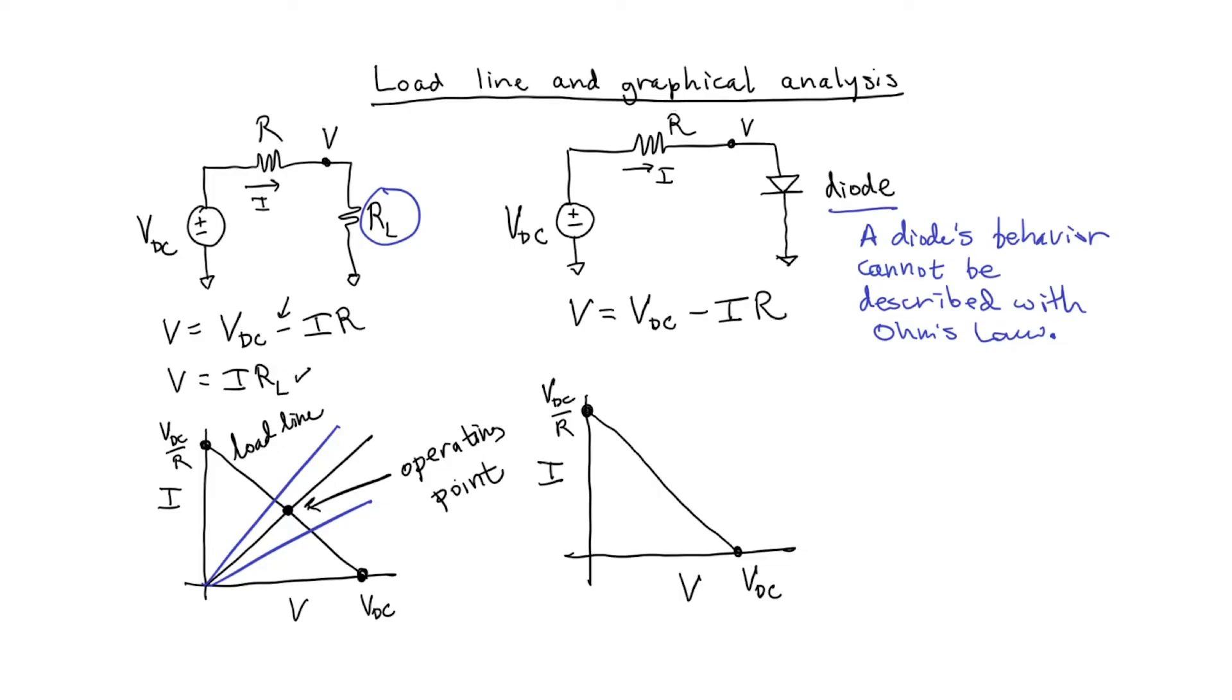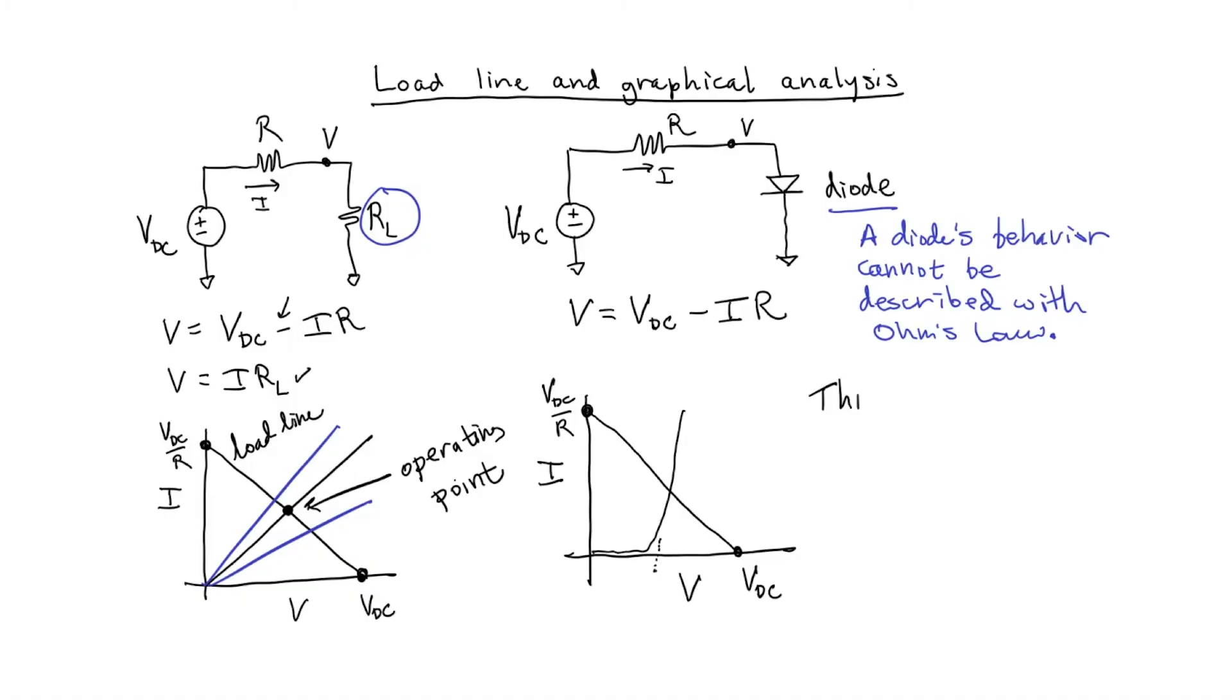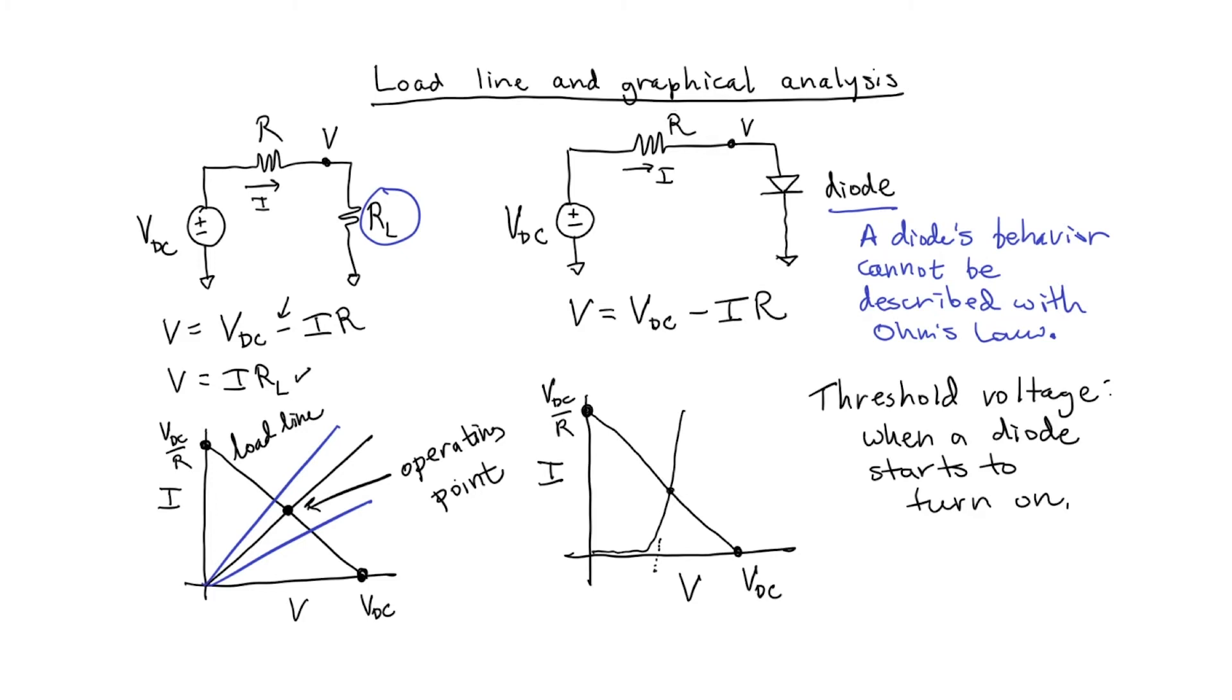Instead, for this example, let's graph what the I versus V behavior would typically be for a diode. For a diode, the I versus V relationship looks something like this. In other words, it's almost an exponential. And the area where the curve starts to bend up is related to what's called the threshold voltage of a diode. And it depends on what the diode is made out of. For example, with a silicon diode, the threshold voltage is typically around 0.7 volts. The load line analysis method allows us to determine where this circuit will actually operate. It's going to operate right where the two curves intersect.